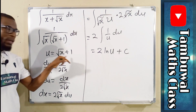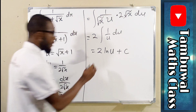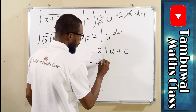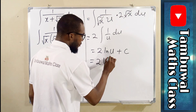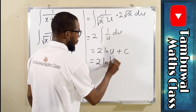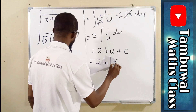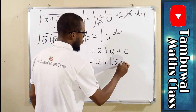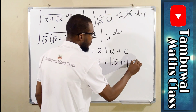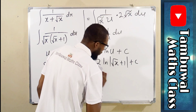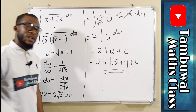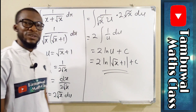Now we back-substitute root x plus 1 for u. So this is 2 times the natural log of the absolute value of root x plus 1, plus the constant of integration. And this is our solution. Thank you for watching. Do have a nice day.